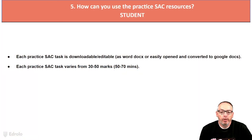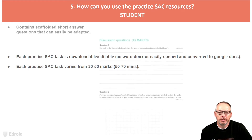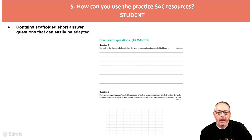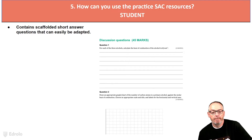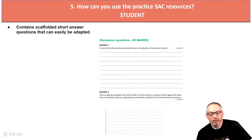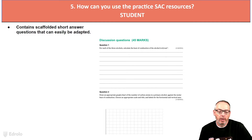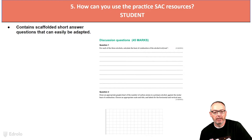How can you use the practice SAC resource? The main thing is they're downloadable, they're editable, and very easy to convert. They're all within 30 to 50 marks. This example is taken from one that's 45 marks — it's really easy to manipulate and adapt them to your class. They are really high-level questions, similar to what we use in the book, not just throwaway questions and time fillers. Ultimately, the whole point of a practice SAC and an actual SAC is to rank your students as fairly and equitably as possible.